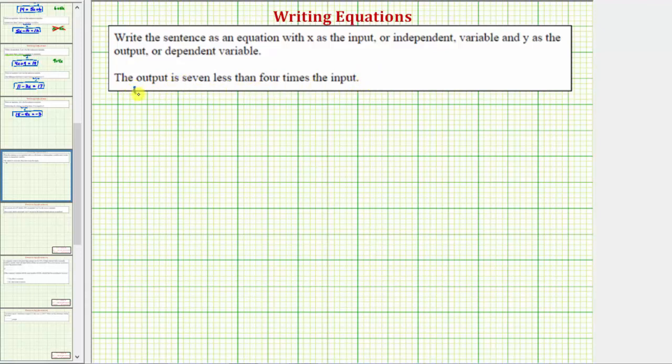And because the output variable is y and the input variable is x, we can also read this as y is seven less than four times x. So because 'is' means equals, we begin with y equals.